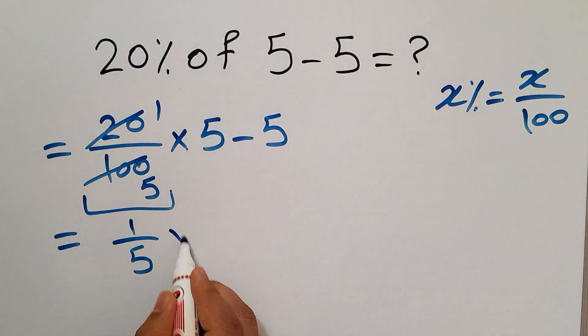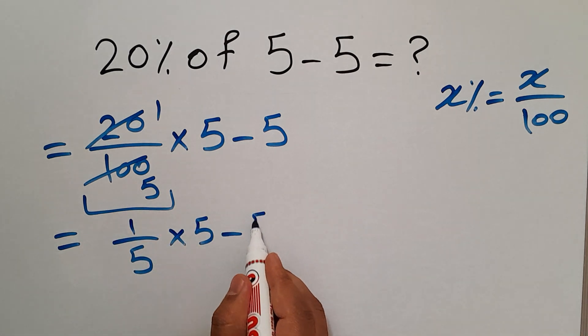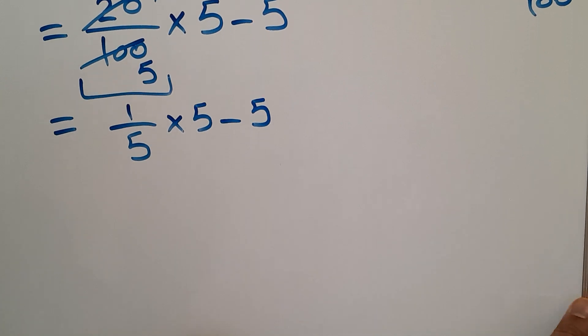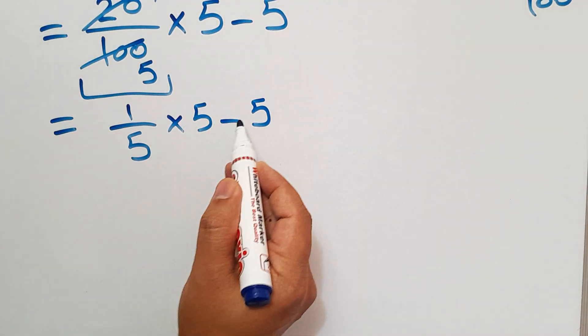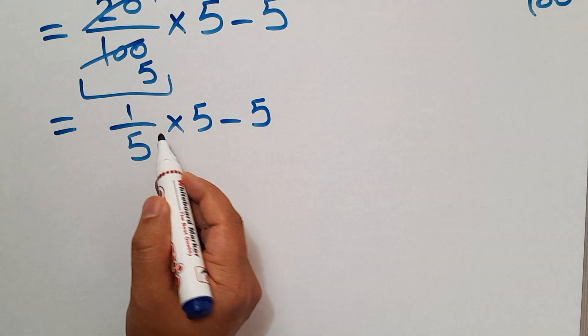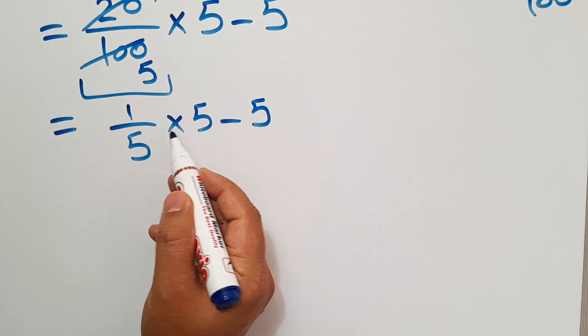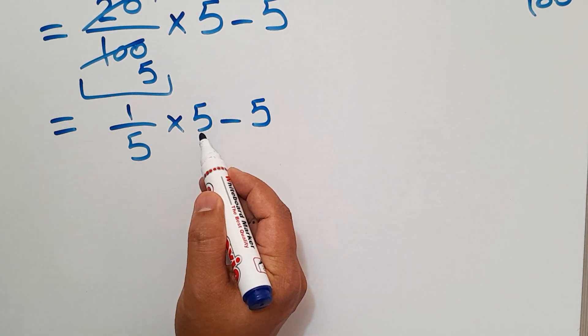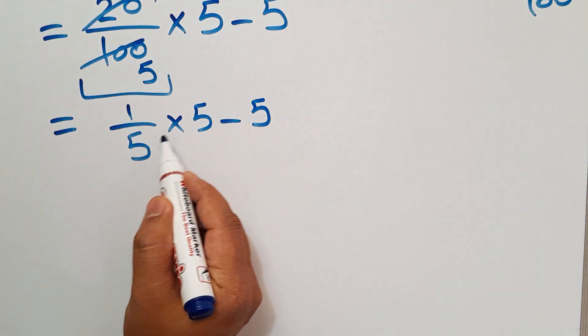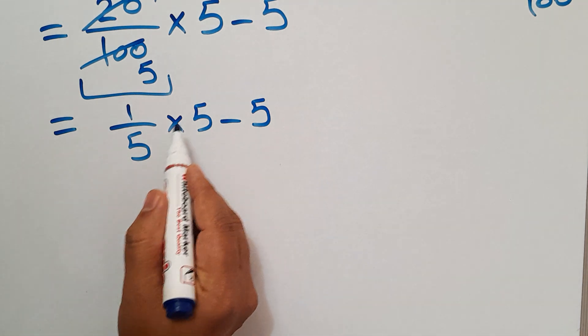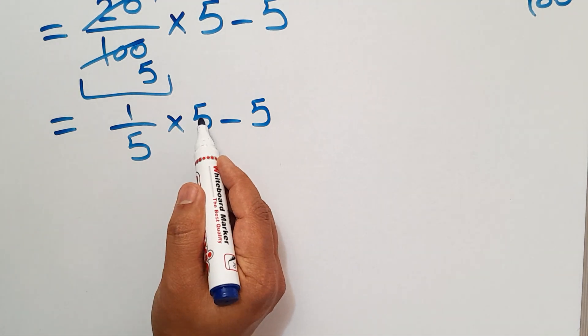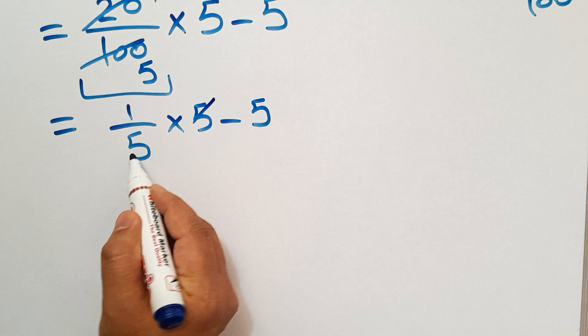Okay, and now we have one multiplication and one subtraction. As we know, multiplication has higher priority than subtraction, so first we do 1 over 5 times 5. Here this 5 and this 5 can cancel each other out.